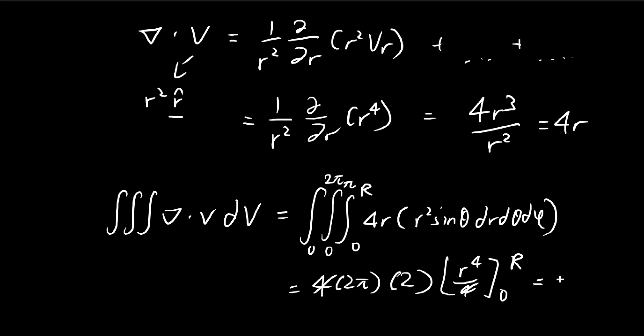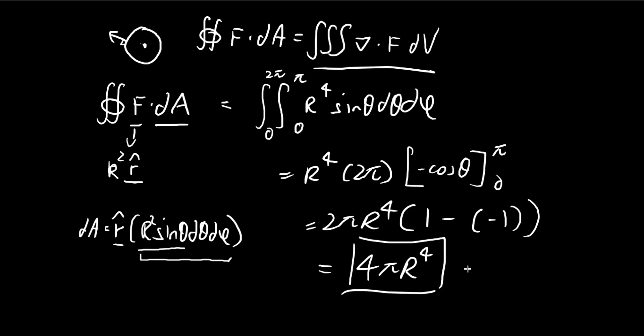So see that these two, they multiply together, give you 4 pi r to the power of 4. So see that this is exactly equal to what we had before. So we've essentially verified the divergence theorem.